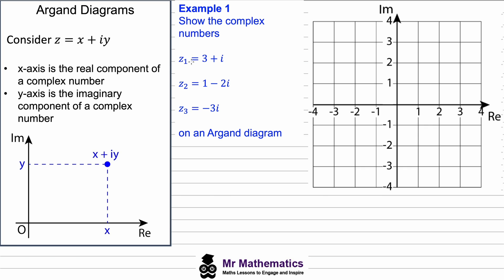In Example 1, we show the complex numbers z1, z2, and z3 on an Argand diagram. From z1 we have a real part of three and an imaginary part of i. So on the Argand diagram we go three across from the origin and then one up for the imaginary value. We plot the coordinates (3, 1) and label this z1.